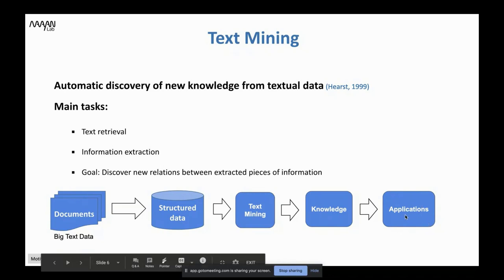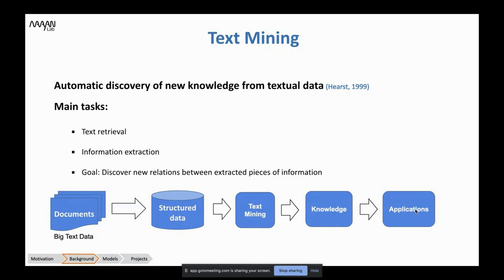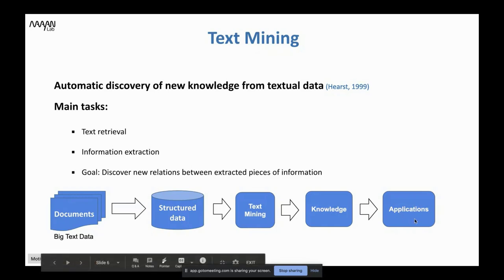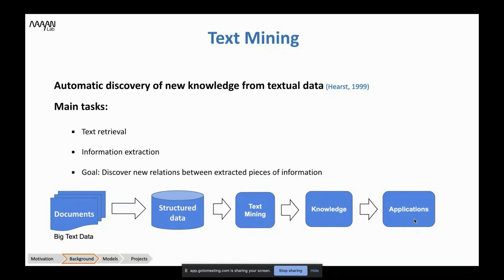For example, we can have patients with charts. An application can analyze what doctors have written in a patient's chart and automatically detect if there is a rare disease, or if the patient is using different drugs that could have dangerous side effects the doctor is not aware of. We can highlight this information to the doctor and say: 'Hey, beware of this drug combination.'